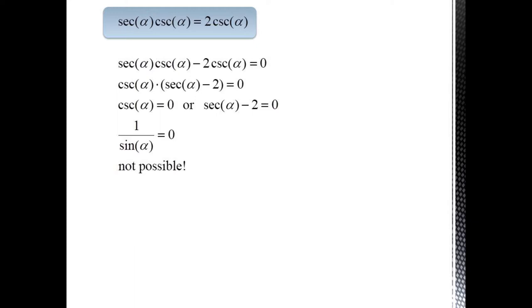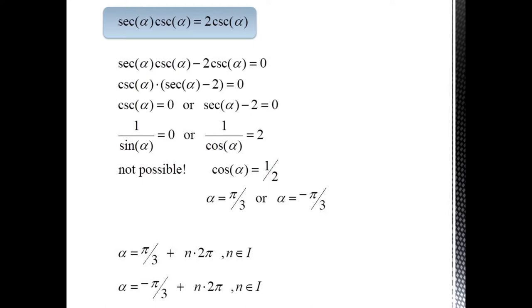we get cosecant alpha equals 0 or secant alpha equals 2. Cosecant equals 1 over sine alpha. And since this fraction has a 1 in the numerator, it's never equal to 0. Hence our first expression provides no solution. Our other equation gives us 1 over cosine alpha equals 2. If we invert both sides, we get cosine of alpha equals 1 half. This gives us alpha equals pi over 3 plus n times 2 pi, or alpha equals minus pi over 3 plus n times 2 pi.